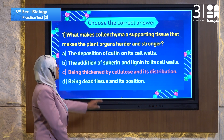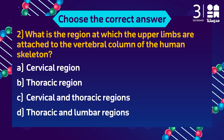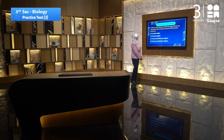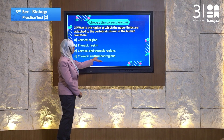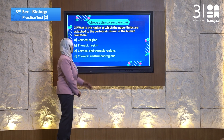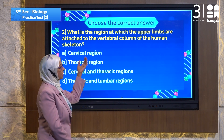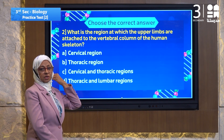Let's go to question number two. Question number two speaks about the region: What is the region at which the upper limbs are attached to the vertebral column in the human skeleton? He asks about the area of attachment. The upper skeleton is attached to the vertebral column by the cervical region, thoracic region, or lumbar region. The cervical region is about the neck parts — it's not the attachment of upper limbs.